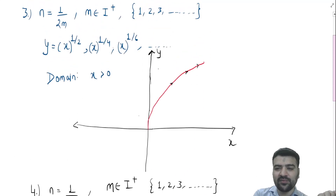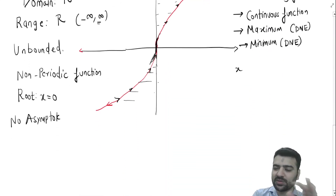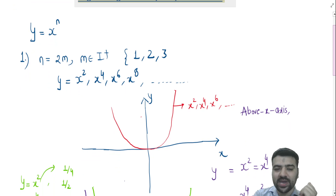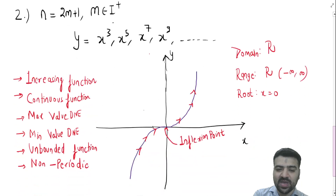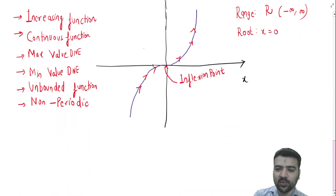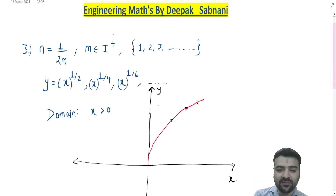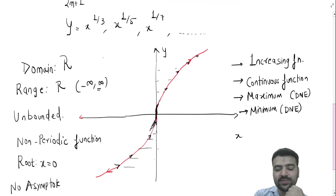So to summarize: previously we looked at the shapes of x squared, x to the 4th — one type — and x cubed, x to the 5th — another type. Today we saw the graphs of x to the power half, one by four, and so on, and one by three, one by five, and so on. I hope this is very clear to all of you. Thank you for watching the video.